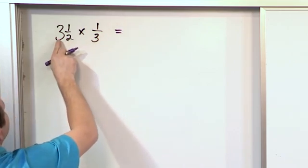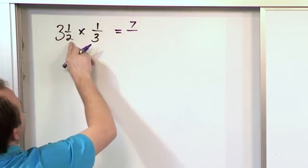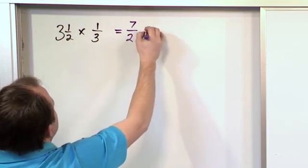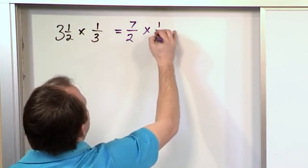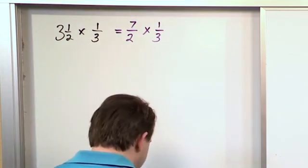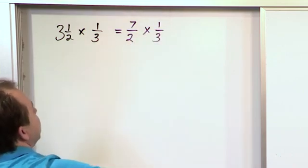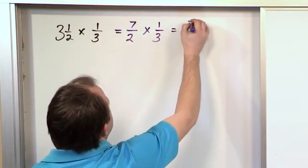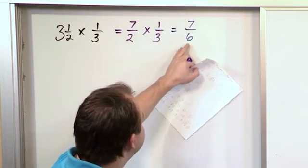So for this one, 3 × 2 gives me 6 plus 1 gives me 7, and I always write it over what's on the bottom. So now I've transformed this into 7/2. Now when I multiply 7/2 by ⅓, I treat it exactly the same way as I've done every other fraction that I've multiplied. I multiply the tops and I multiply the bottoms. 7 × 1 gives me 7. 2 × 3 gives me 6. So the answer is 7/6.